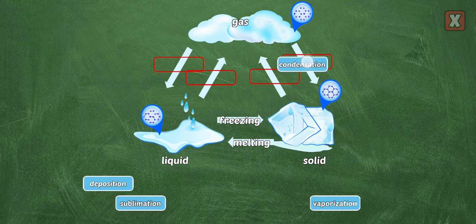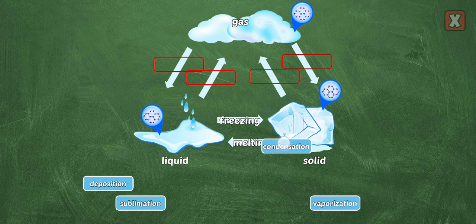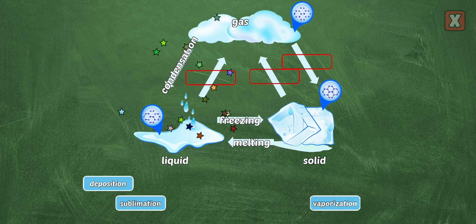Condensation is when a gas becomes a liquid. When heat is added, the molecules move faster.